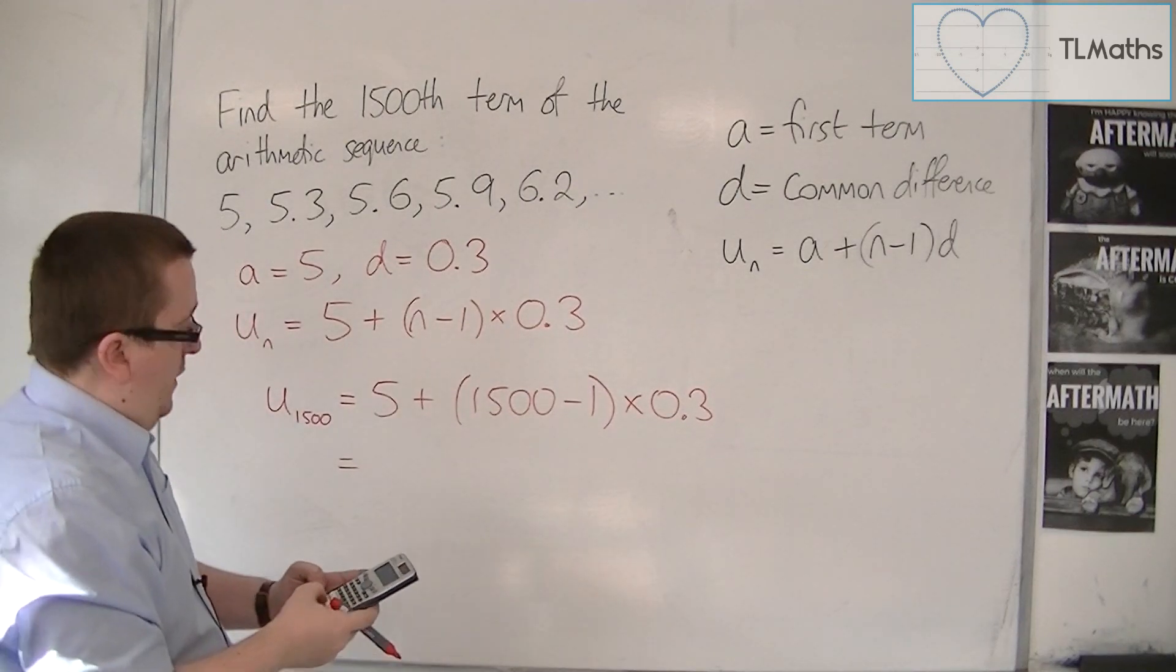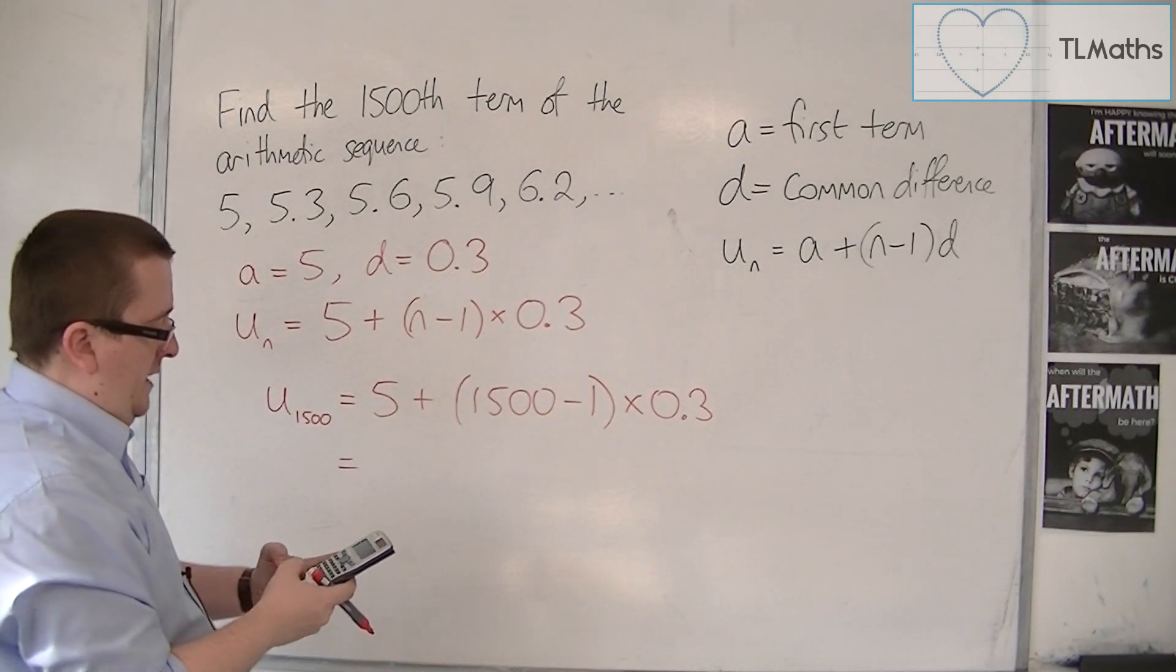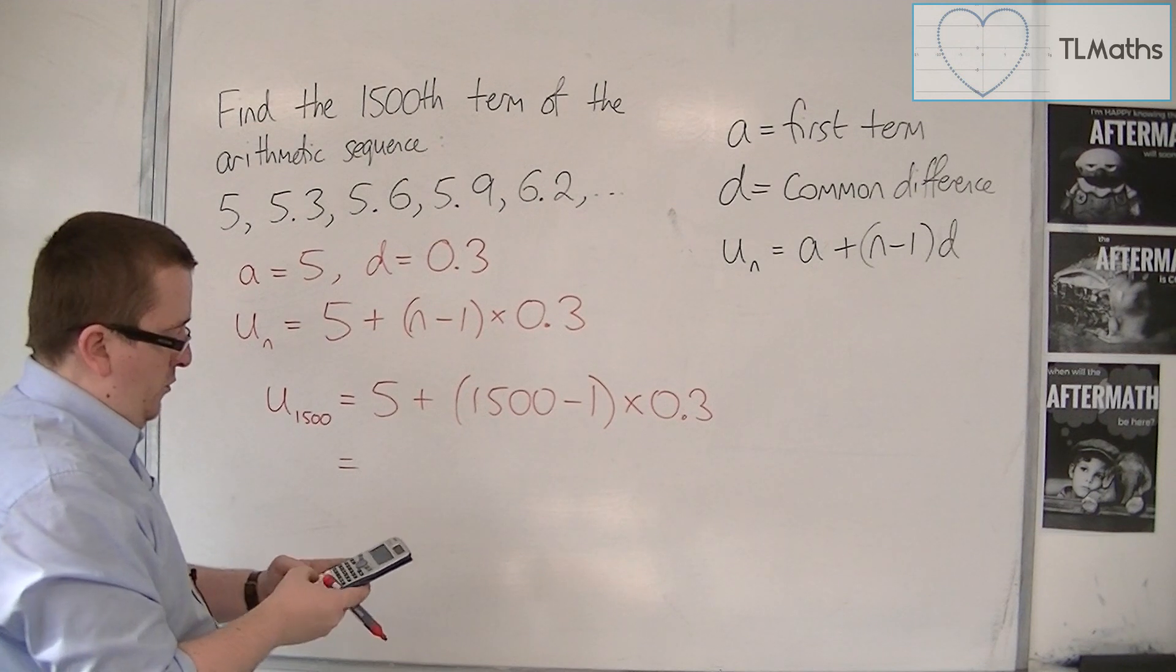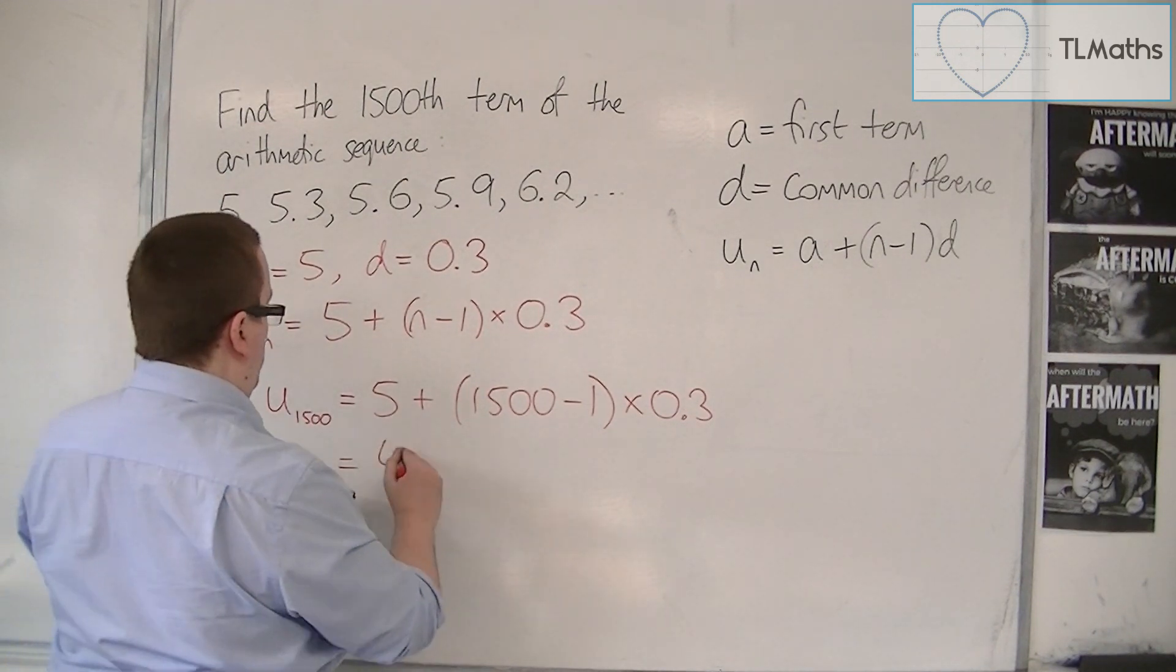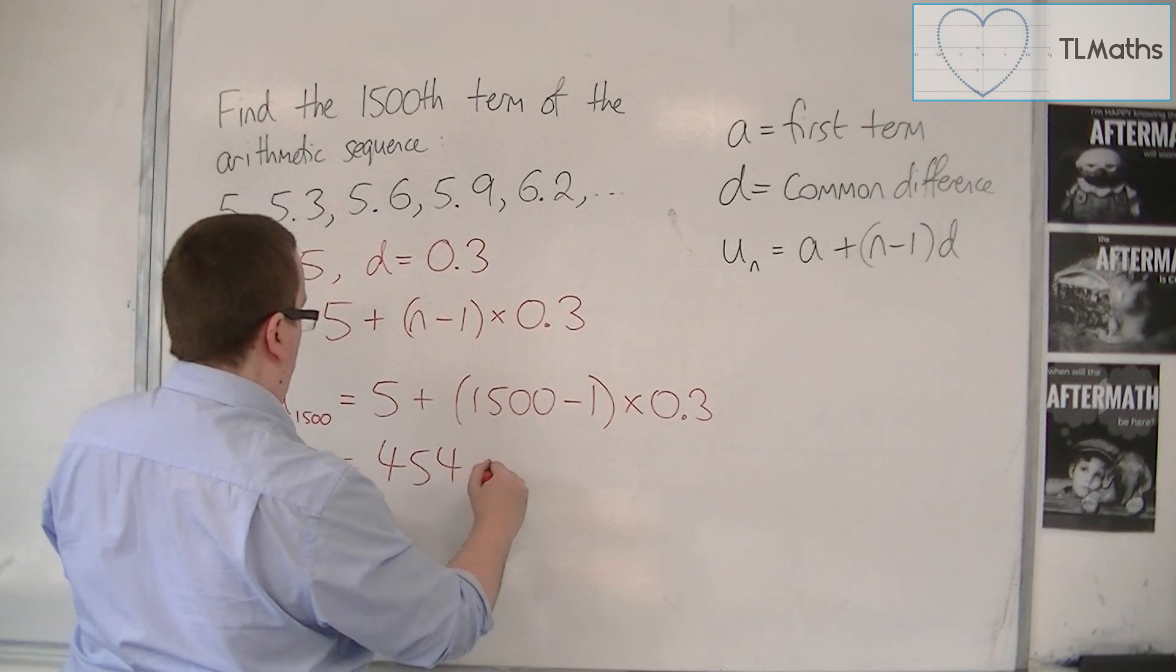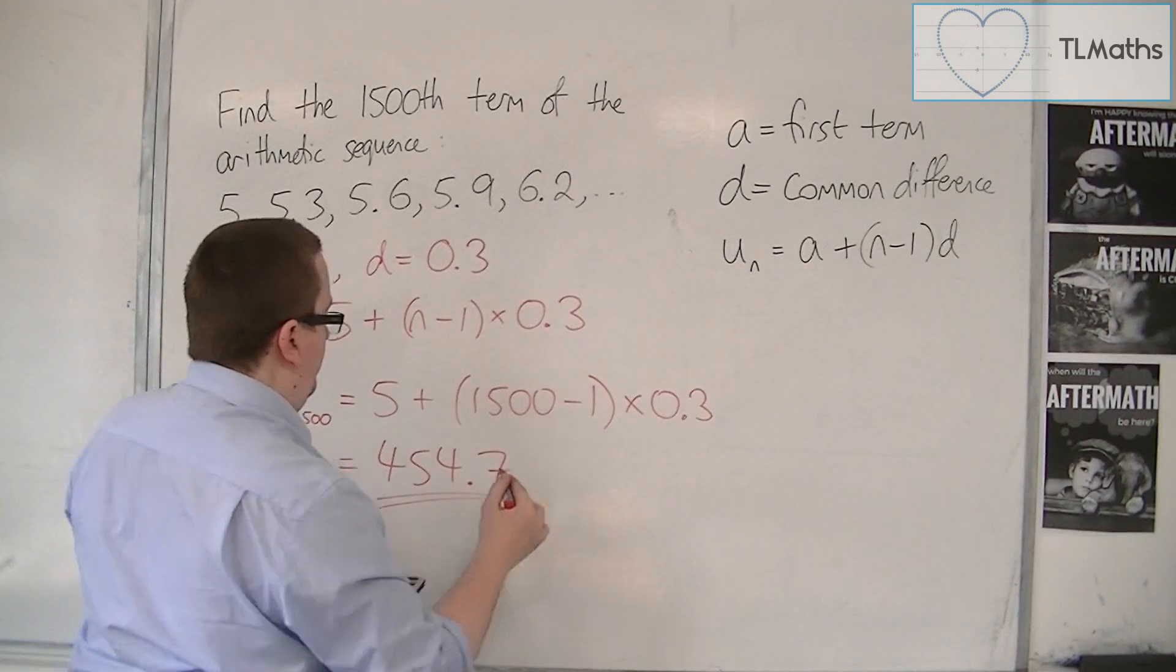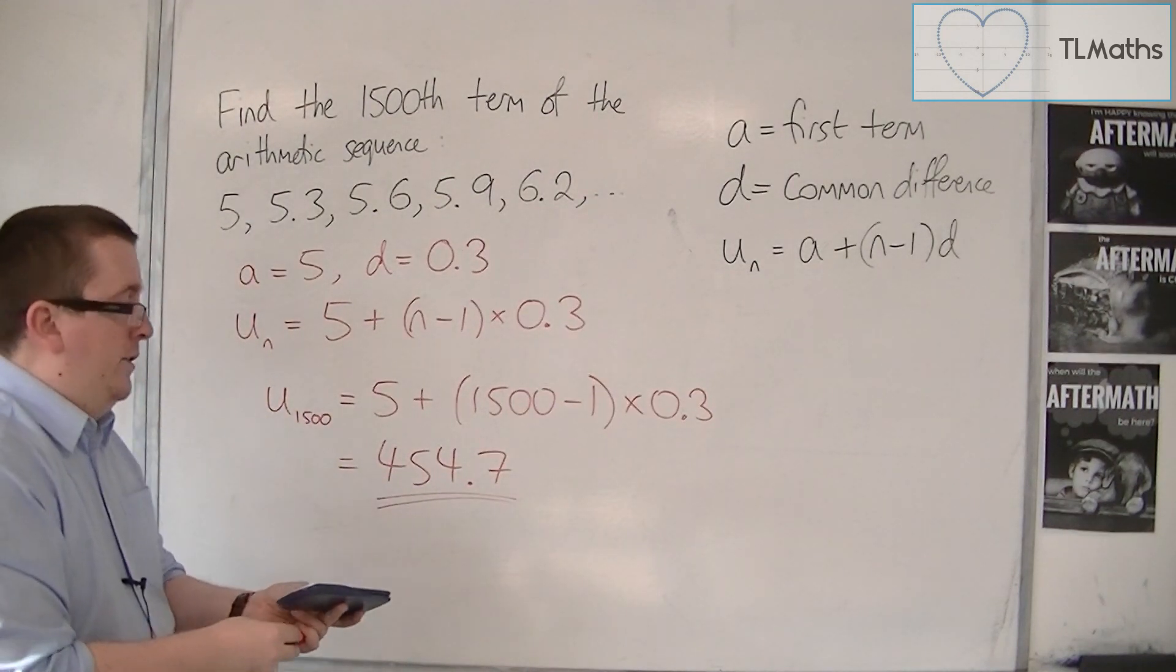So 5 plus 1,500 take away 1 times 0.3, and that gets me 454.7. And that's the value that I need.